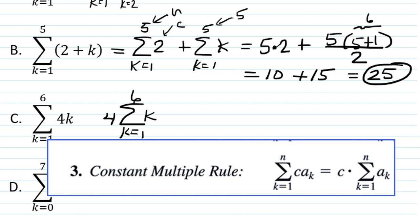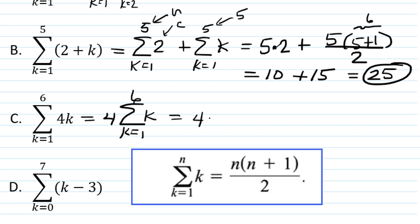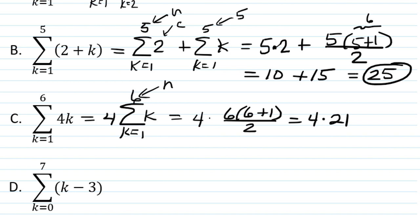So in general, we have that the constant multiple rule tells us we can factor out a coefficient. Can't factor out anything with a k in it, because that varies over the sum. But that 4 does not vary, so we can factor it out front. So we have 4 times the sum k equals 1 to 6 of k. We can use the formula sum k equals 1 to n of k is n times n plus 1 over 2, where n in this case is 6. So we're going to have 6 times 6 plus 1 divided by 2. So that's going to be 4 times, and then let's see, that's 3 times 7 is 21. So that's going to be 84.